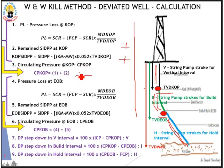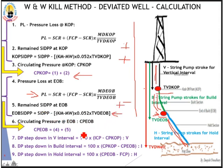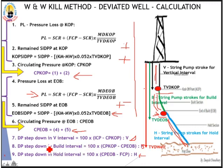We sum these figures to get the circulating pressure at the kickoff point. Similarly for the end of build — first use the formula to work out the pressure loss at end of build, then calculate the remaining drillpipe pressure at end of build, and add both figures together to get the circulating pressure at end of build. For each interval — the vertical interval, the build section, and the hold section — we have the total pump strokes inside the drill string, called V, B, and H respectively. We use the formula to work out the pressure drop per every 100 strokes for each interval.